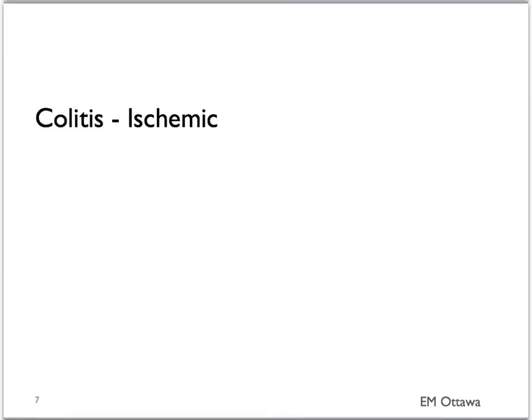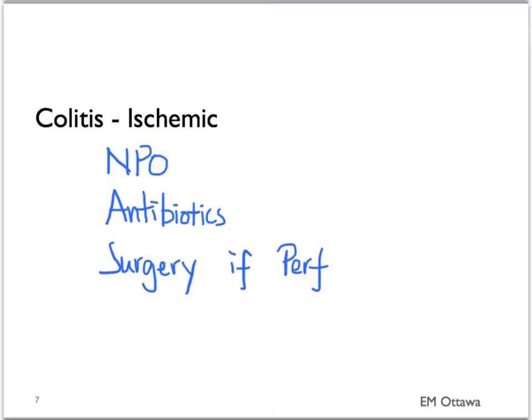For ischemic colitis, it is usually caused by decreased blood supply to the gut. The patient needs to be on bowel rest and therefore should be NPO. Antibiotics are often given. If there is perforation of the bowel, then the patient will need surgery.